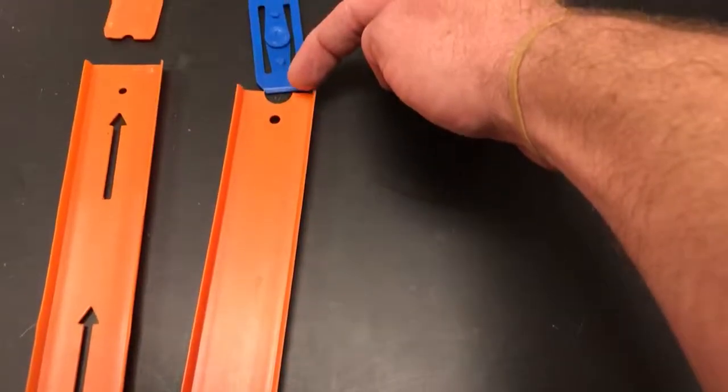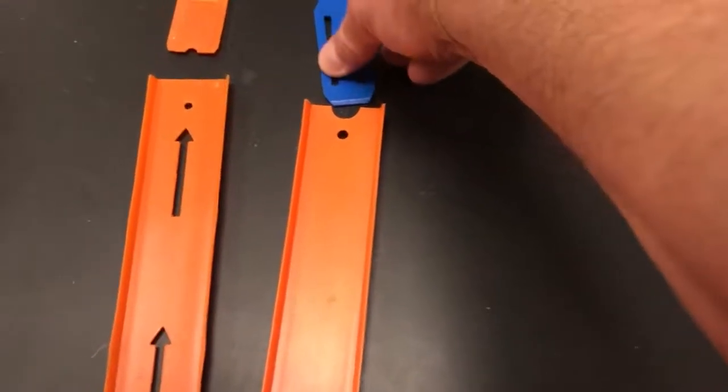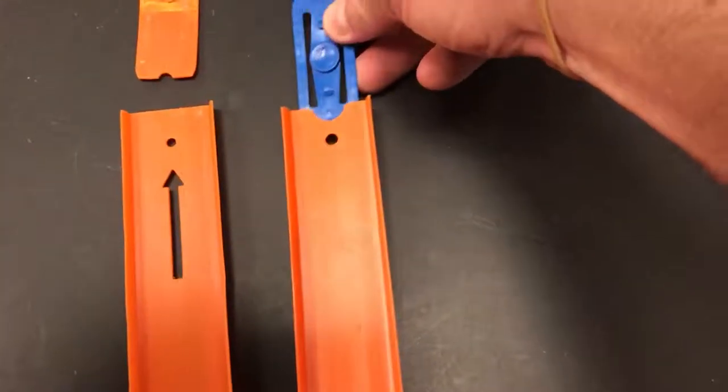Okay, if we run out of the new tracks, the new tracks have that little curve right there and the blue piece fits right into it and snaps into place.